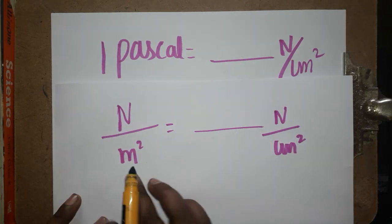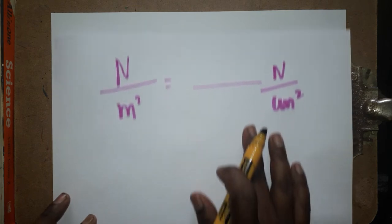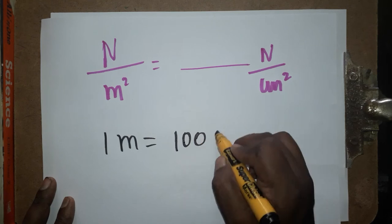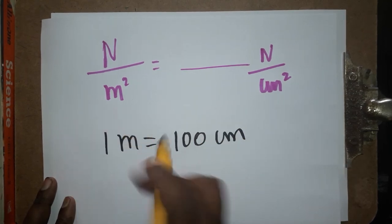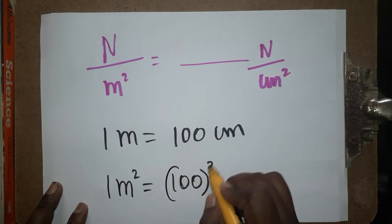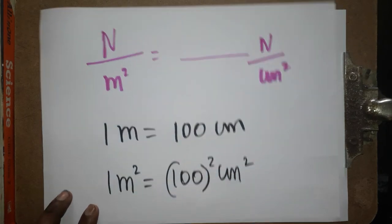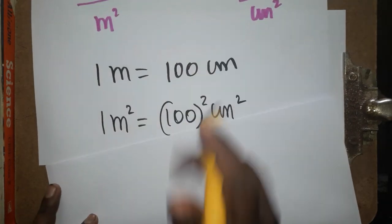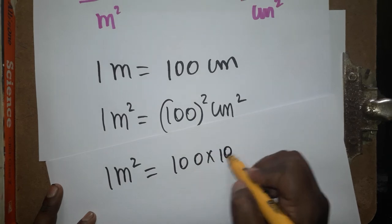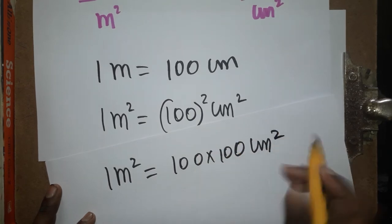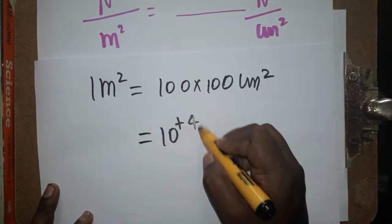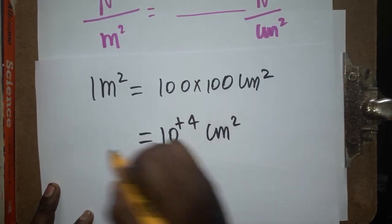In the numerator, newton stays as newton — no changes. But in the denominator, we convert meter to centimeter. One meter equals 100 centimeters, so one meter square equals 100 squared centimeter square, which is 100 into 100. That gives us 10 to the power 4 centimeter square equal to 1 meter square.